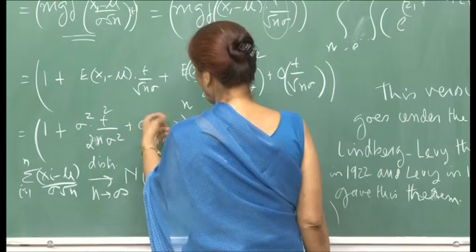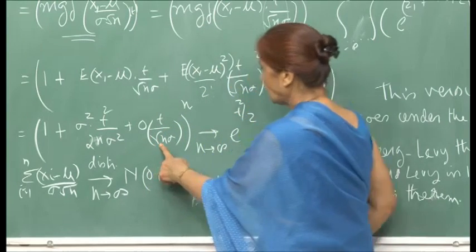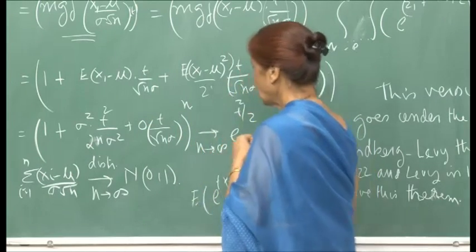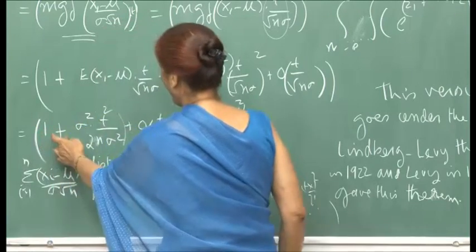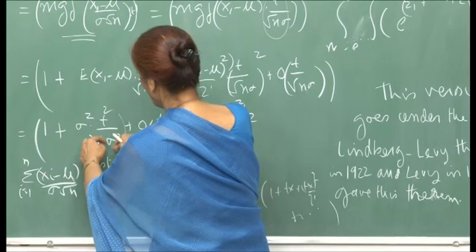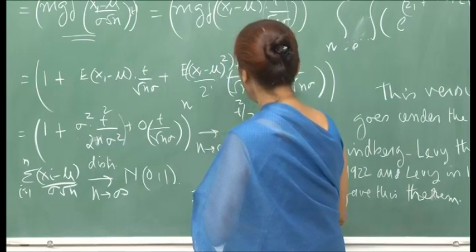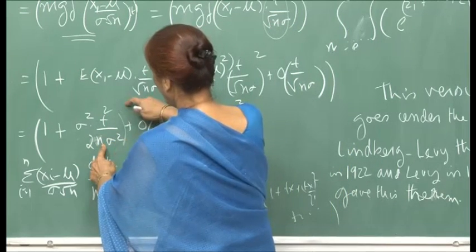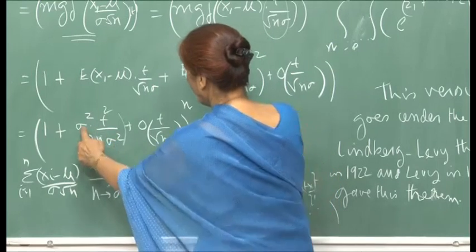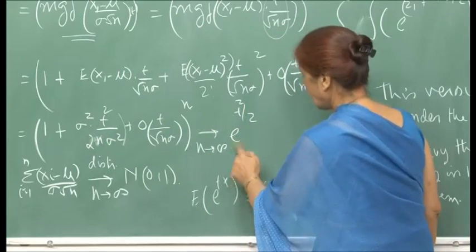As n goes to infinity, since n^{1/2} is in the denominator of higher-order terms, those terms go to 0. We are left with (1 + t^2/(2n))^n raised to the power n. You know that this converges to e^{t^2/2}, because the limit of (1 + a/n)^n = e^a. The sigma^2 cancels out and we are left with t^2/2. So the MGF converges to e^{t^2/2} as n goes to infinity.